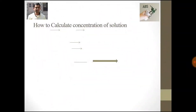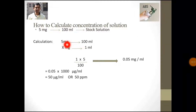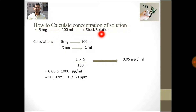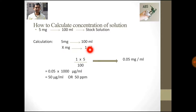Now we will see how to calculate the concentration of a solution. I am taking 5 mg of drug into 100 ml of solvent to give a stock solution. To find how much drug is present in 1 ml, I do a cross multiplication: 1 multiplied by 5 divided by 100, which gives 0.05 mg per ml.